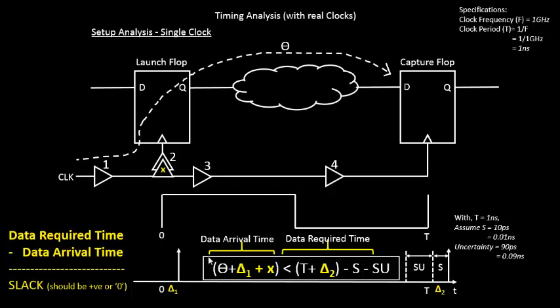This equation - if you see it on the left hand side, you are expected to be less than the data required time. But addition of this particular X, this particular buffer, might get you late over here.